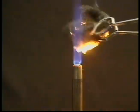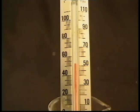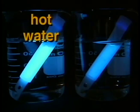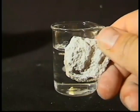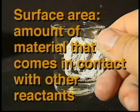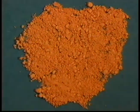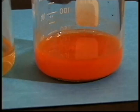Different chemical reactions have different reaction rates. The reaction rate is the speed with which reactants turn into products. Temperature is one factor that affects reaction rate. Generally speaking, an increase in temperature increases the reaction rate. Take, for example, these glow-in-the-dark sticks. The stick in the cold water does not glow as brightly as the one in the hot water, because the hot water accelerates the reaction rate between the substances inside. Surface area also affects the reaction rate. Surface area refers to the amount of the material that comes in contact with other reactants. For example, this piece of chalk has less surface area than the same amount of chalk powder. The piece of chalk with less surface area reacts at a slower rate than the chalk powder, which has a greater surface area.